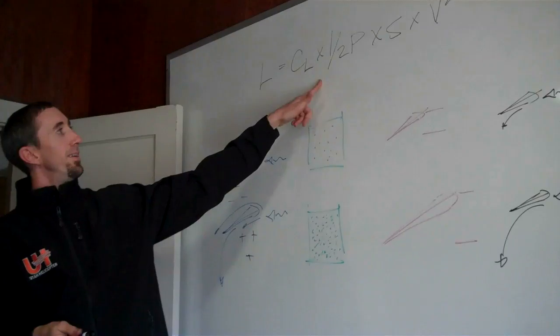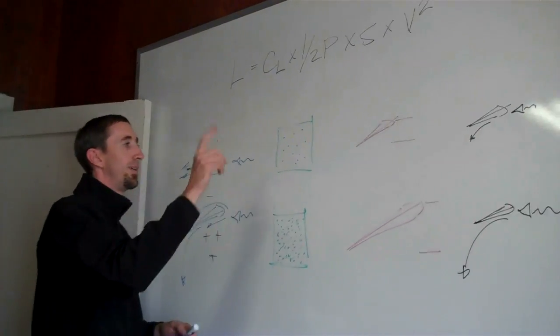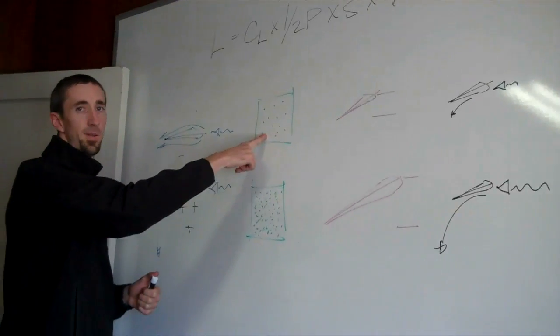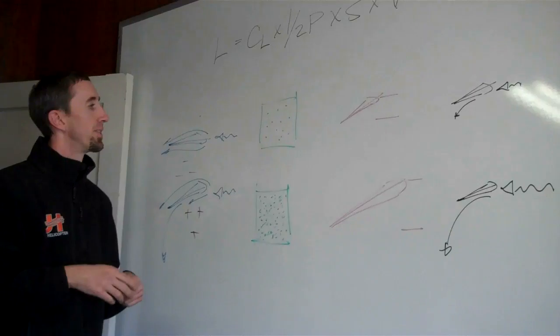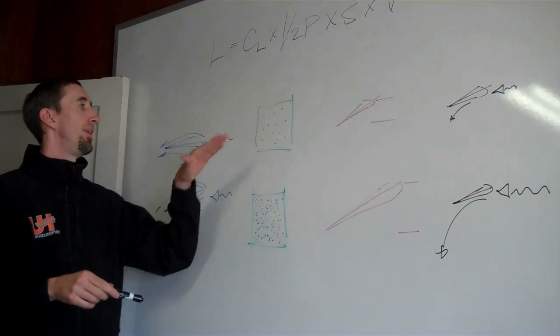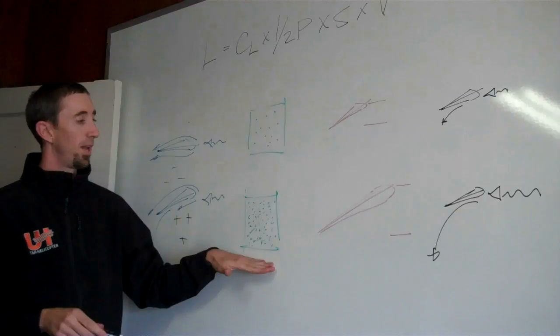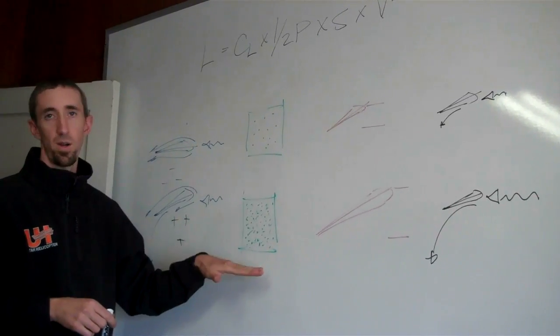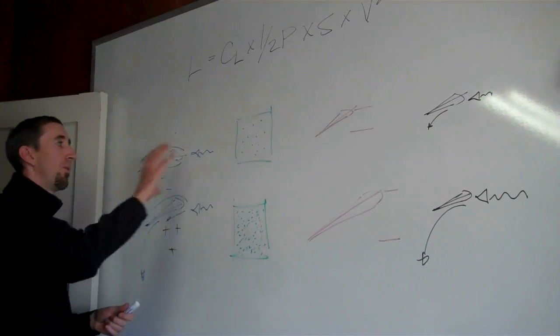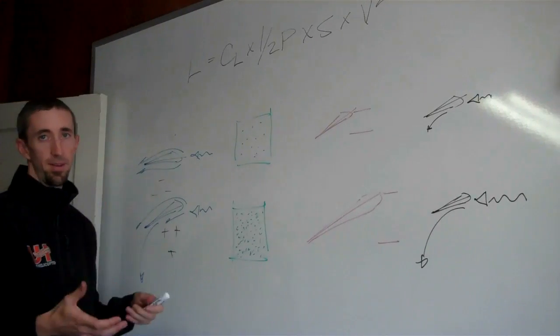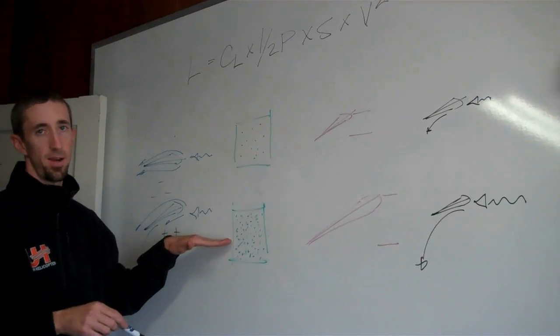Okay. Second one is atmospheric pressure. If you're up in altitude, you don't have very much air, so not a lot of air is going to go over the blades. But if you're down at a lower altitude, you're going to have a lot more air to work with that's going to go over the blades to create the lift. So the more air, the better.